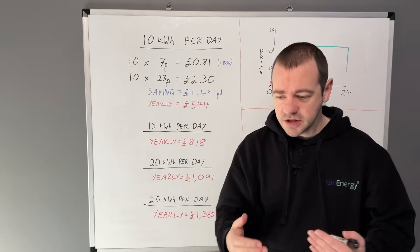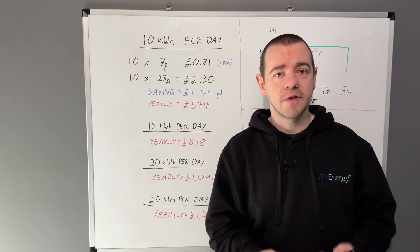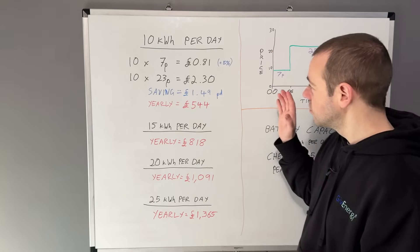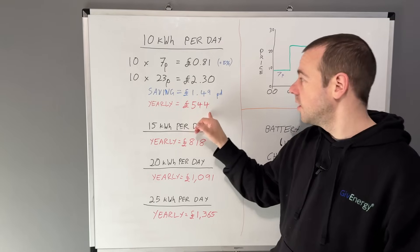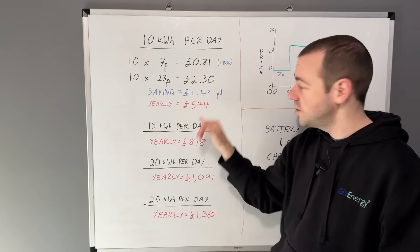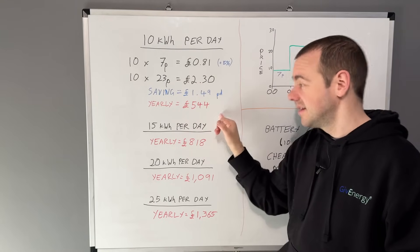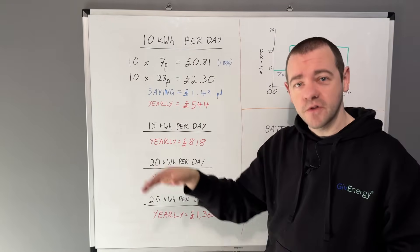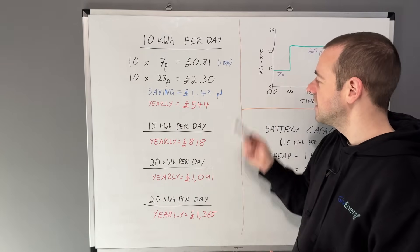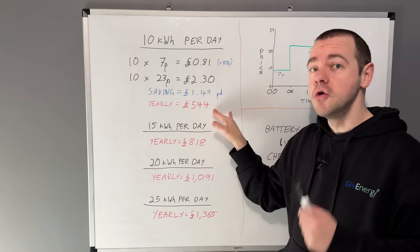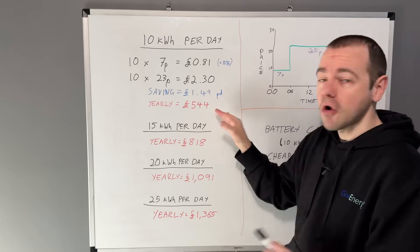Now remember, this video is essentially aimed at people who already have a GiveEnergy system, so the hardware is already there. This is what you could be missing out on if you use 10 kilowatt hours per day on average per year. So over a decade, that's well over five and a half thousand pounds at today's prices. That's a huge saving which you're not taking advantage of.